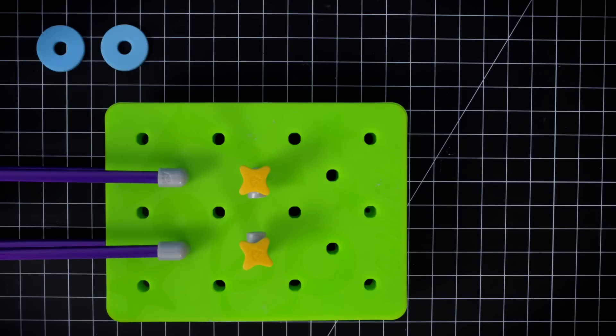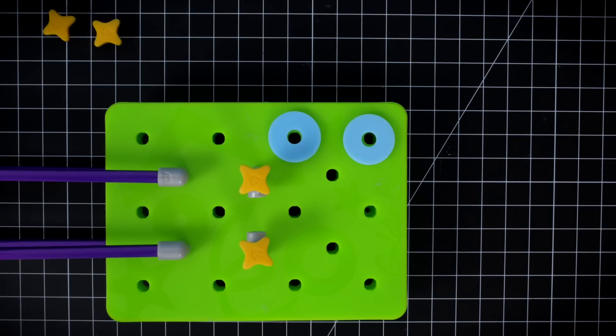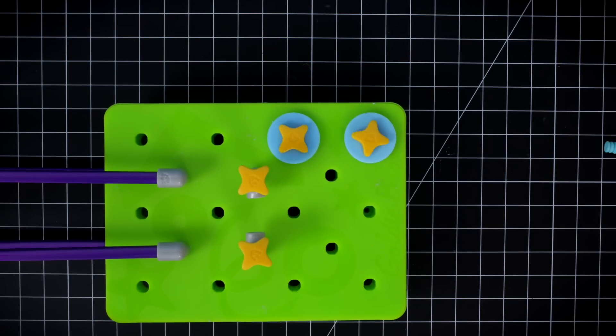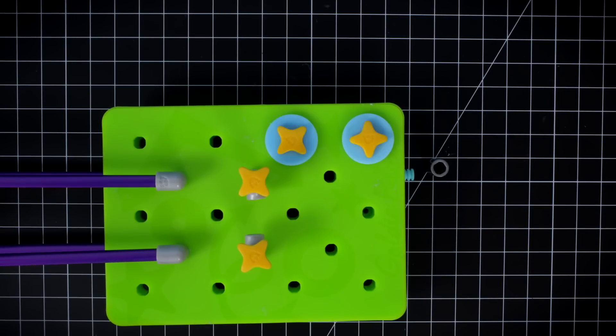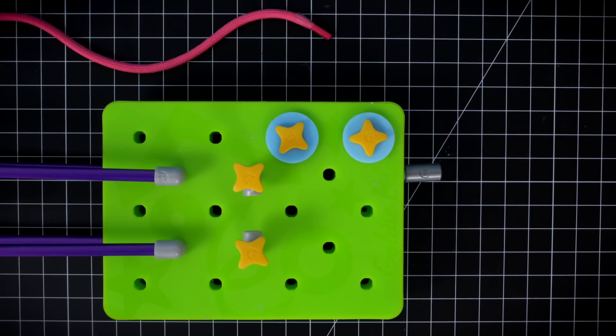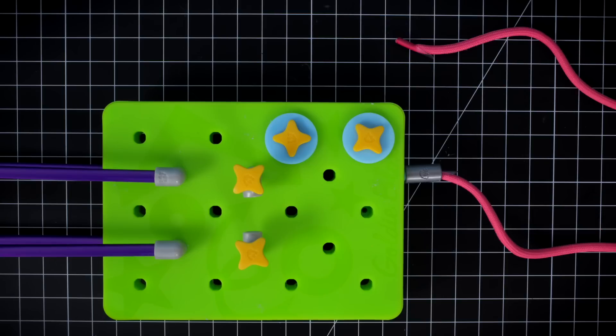Step five. Place two washers over two holes on the board and secure them with star stoppers. On the side of the board, use a blue peg and a coupler joint to create the output jack. Use one of your strings as a cable.